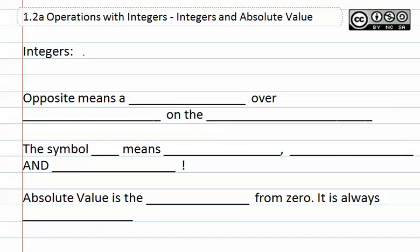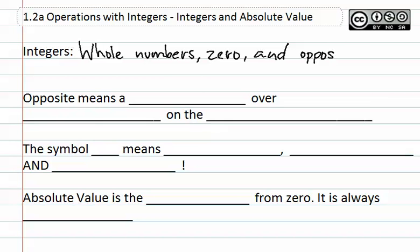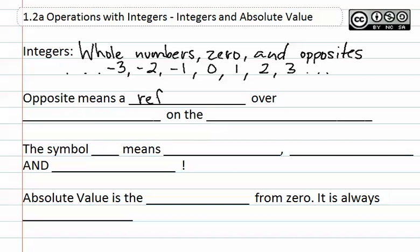Integers are whole numbers, zero, and opposites. Opposites are whole numbers that have negatives or opposite values, such as negative three, negative two, negative one, zero, one, two, and three. This can continue on in both directions. Opposite means a reflection over zero on the number line.